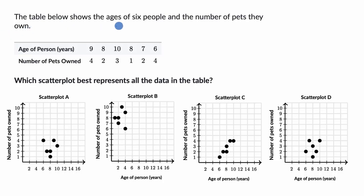We're told the table below shows the ages of six people and the number of pets they own. So this row is age of people and then the second row is number of pets. So the person who's nine years old owned four pets, the person who's eight years old owned two pets and so on and so forth.